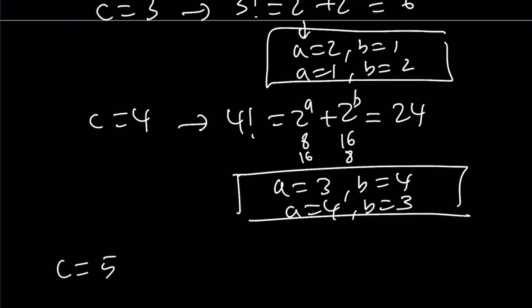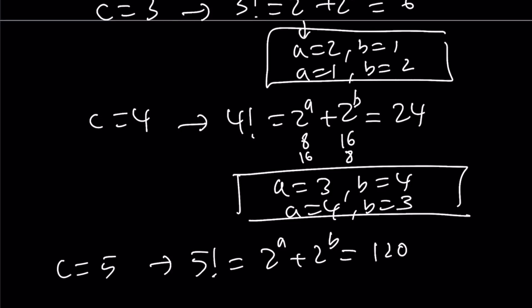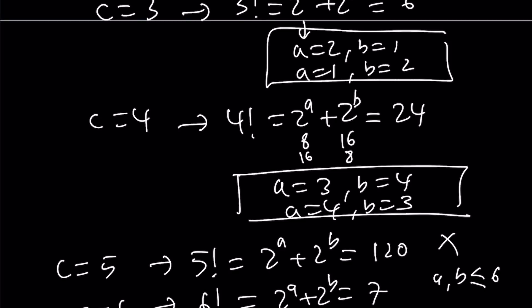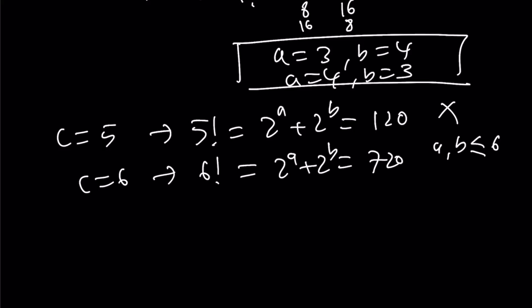For c=5: 5 factorial = 120. We need to check if 120 can be expressed as the sum of two powers of 2. Since 2^6 = 64 is the largest relevant power, we cannot get 120 this way, so no solutions. For c=6: 6 factorial = 720, and we are also unable to express 720 as a sum of two powers of 2. No solutions there either.